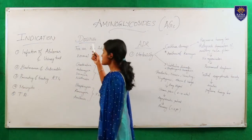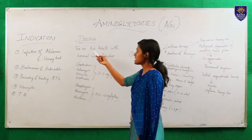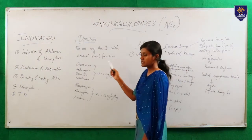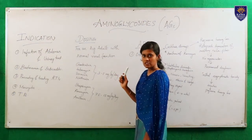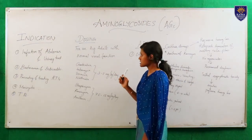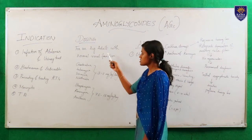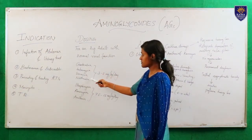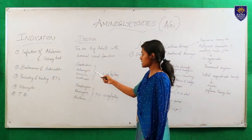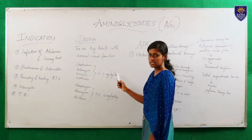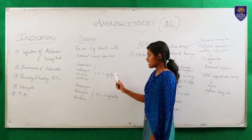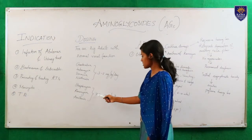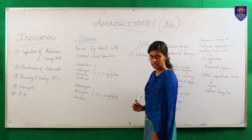Next is the dosing. For an average adult with normal renal function, that is creatinine clearance greater than 70 ml per minute: gentamycin, tobramycin, sisomycin and netilmycin are given as 3-5 mg per kg per day. Streptomycin, kanamycin and amikacin are given 7.5-15 mg per kg per day.